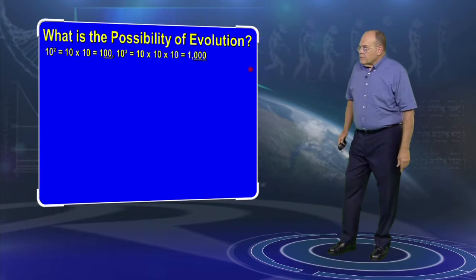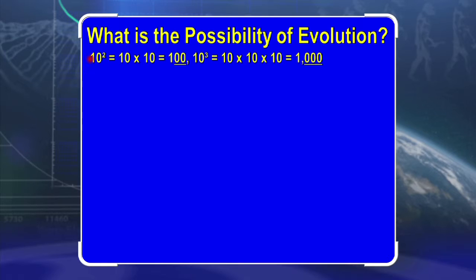Just to remind us, if I write the number 10 with the number 2 above the upper right hand corner, that's 10 squared, or 10 times 10, which equals 100. Or 3 above the upper right hand corner is 10 cubed, or 10 times 10 times 10, equals 1,000. Now, let's write the number 10 with the number 23 above the upper right hand corner. That's the number of known stars in the known universe.